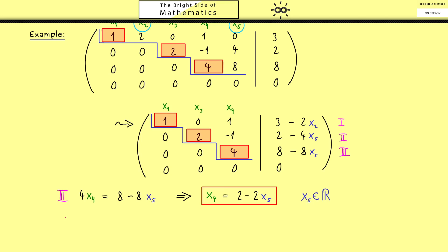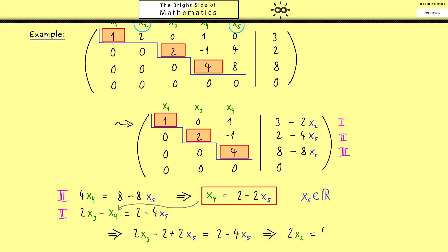Moving to x3, we go to the second row. This equation reads 2 times x3 minus 1 times x4 equals 2 minus 4x5. We substitute in what we already know for x4. The only leading variable now in this equation is x3, and all free variables go to the right-hand side, giving 4 minus 6x5 on the right. Dividing by 2, we get x3 equals 2 minus 3 times x5. Again, different choices of x5 give different values for x3.